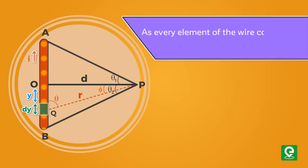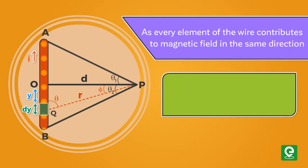As every element of the wire contributes to the magnetic field in the same direction, we have magnetic field equal to mu naught I upon four pi integrating from A to B dy sine theta by R square. Let's call this equation 1.